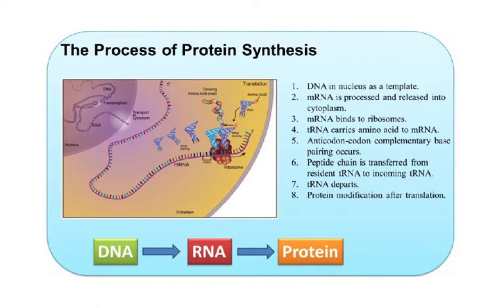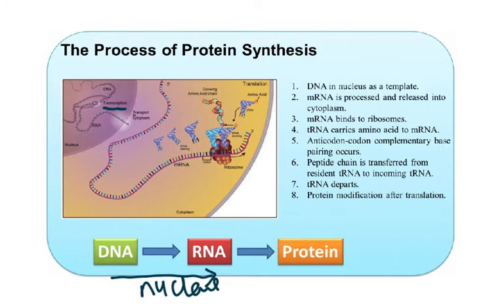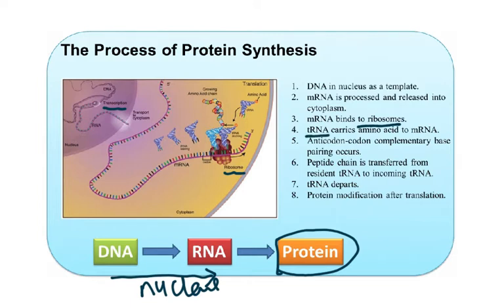The DNA in the nucleus is a template — the cookery book to make the brownies. The mRNA copies this recipe; it is processed and released into the cytoplasm through a process called transcription. So transcription — DNA to mRNA — takes place inside the nucleus. The mRNA then comes out, attaches to the ribosome, amino acids are brought in the right sequence as dictated by the DNA, and a protein is made. tRNAs carry the amino acids to the mRNA.